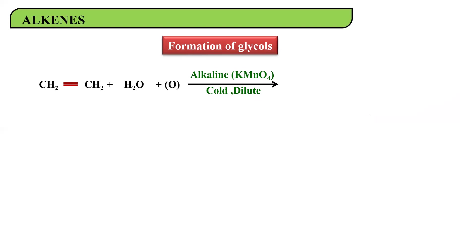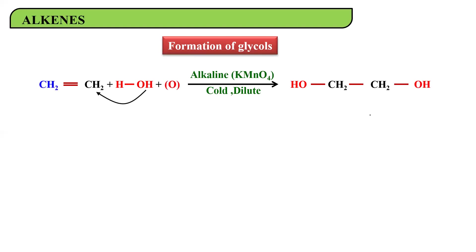Water (H–O–H) will attach onto one carbon atom, so the double bond breaks. You get CH₂–CH₂ with one OH on one side. Then another OH is added to the next carbon atom. So you get CH₂–CH₂ with OH on both carbons — this compound is referred to as a diol.